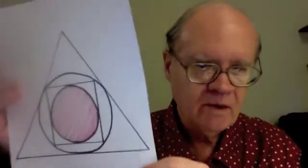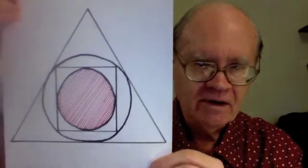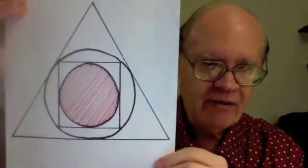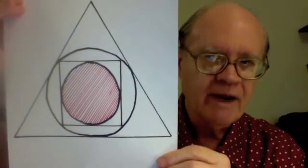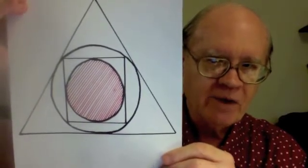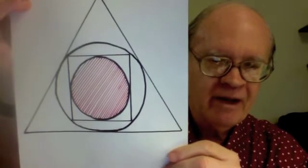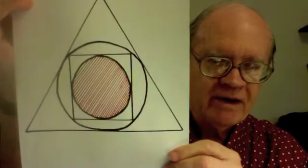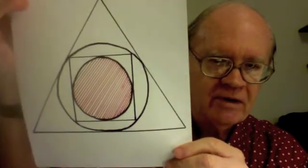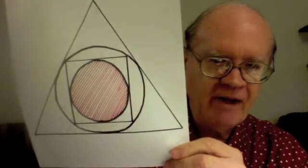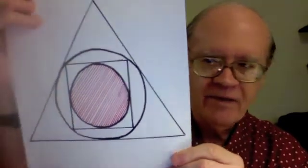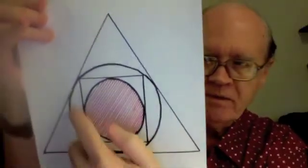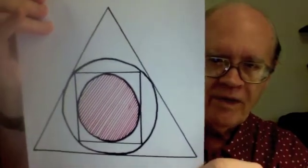Now the challenge, which is somewhat more complicated. We have this geometric figure. We have an equilateral triangle, meaning a triangle that has all three sides the same length. And within it, a circle that just touches the triangle at these three points.